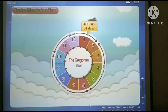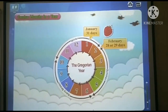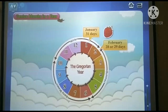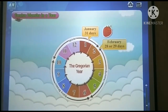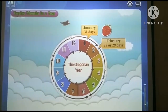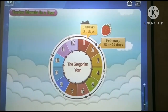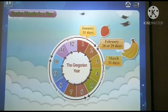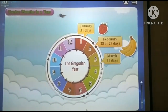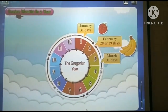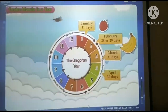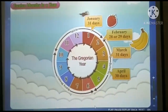Then comes February. February is the second month. It has 28 days, but 29 days in a leap year. March is the third month and has 31 days. Then comes April. April is the fourth month.